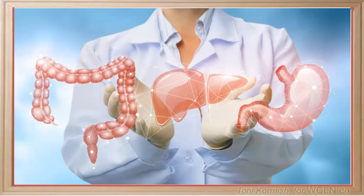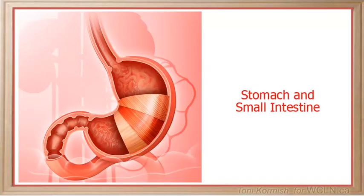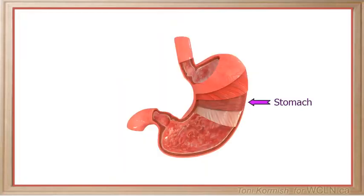We will begin our studies of the human body with the digestive system. I am going to concentrate on two important structures of the digestive system and help you identify how each of these structures is well suited to their function. The stomach is actually an expanded section of the gastrointestinal tract between the esophagus and the duodenum of the small intestine that can be described as a muscular sac.